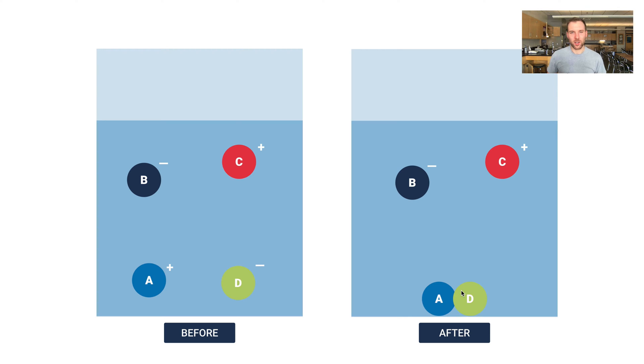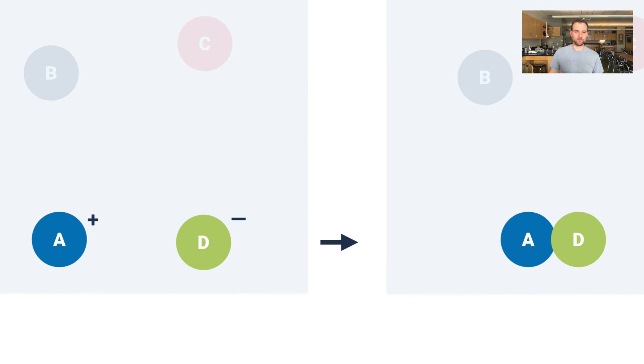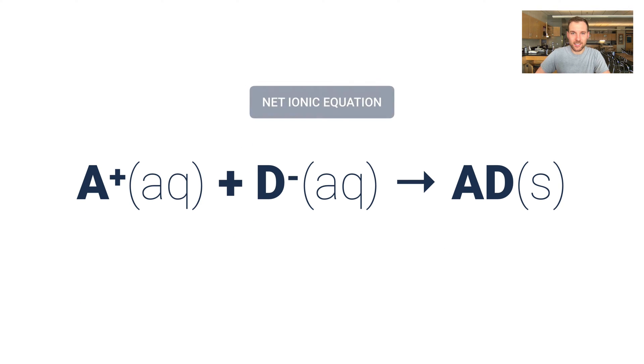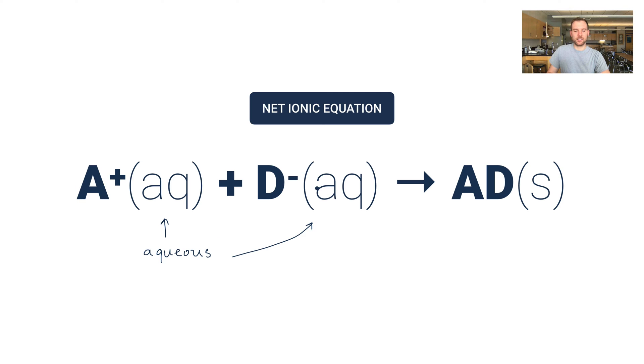The net ionic equation is this here. What's actually changing? A plus and D minus forming AD. Or a net ionic equation might actually look like this. A plus and then we put this AQ. This AQ means aqueous. That means dissolved in water. For the ions forming this precipitate. Now what's missing from the net ionic equation is the spectator ions.